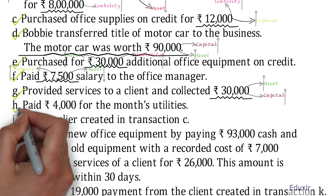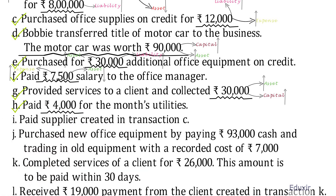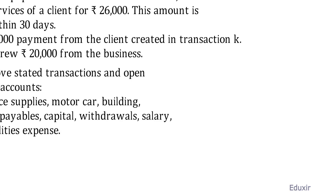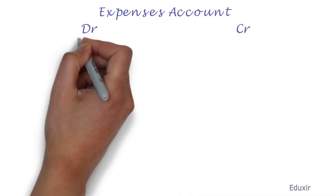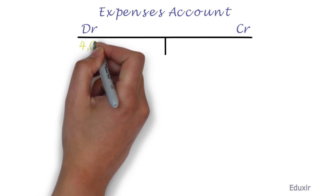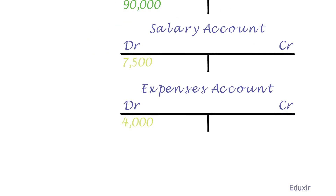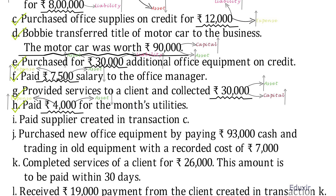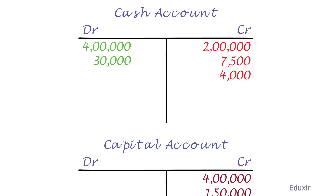Let us now deal with transaction H. There is an expense of 4,000 rupees in this transaction, so this increases the expenses account. The rule to record an increase in expenses is to debit the expenses account. We debit this expenses account with 4,000 rupees. As these expenses are paid out in cash, there is a decrease in the cash account. The rule to record a decrease in the cash account is to credit the cash account, so we credit the cash account with 4,000 rupees. That covers transaction H.